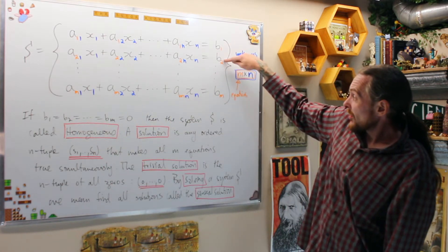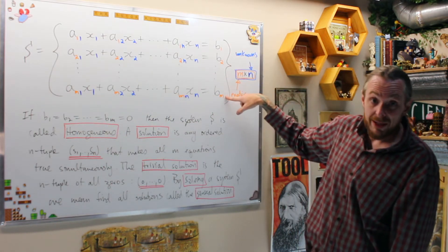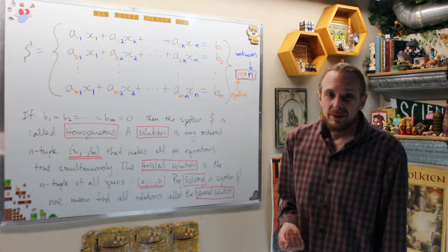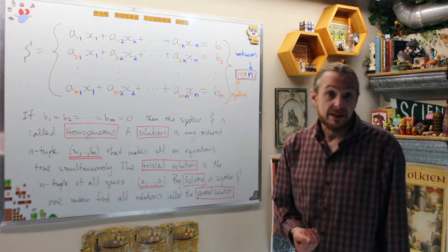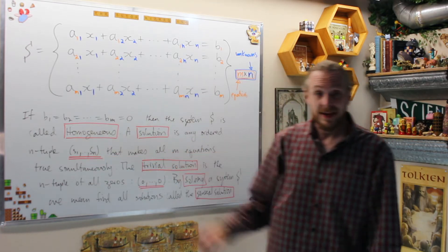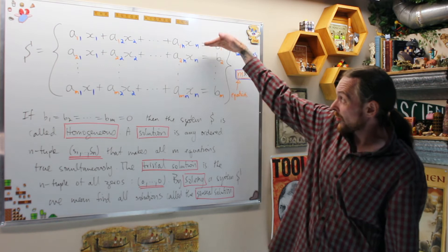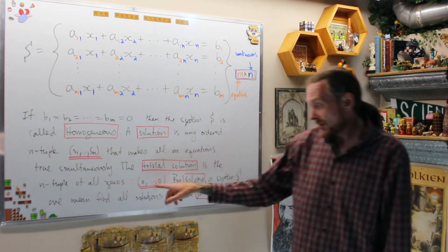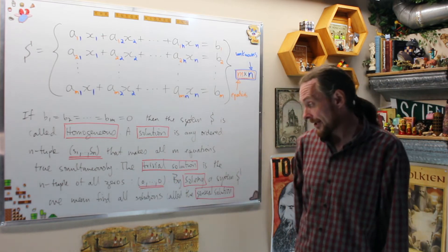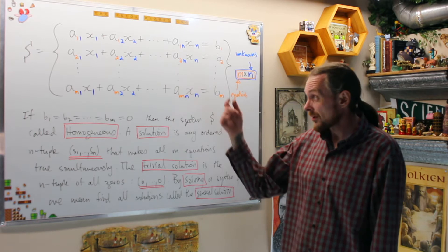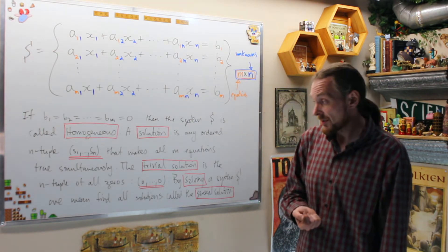First of all, if all of these guys B1 to Bm are zero, we call this a homogeneous linear system. What we're looking for is solutions to non-homogeneous and homogeneous linear systems. A solution is any ordered N-tuple S1 to SN which makes all of the equations true simultaneously. In particular, the trivial solution is the N-tuple of all zeroes. Essentially, what we're looking for in most cases is non-trivial solutions to either homogeneous or non-homogeneous systems of equations.